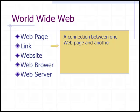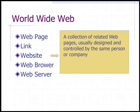A link is a connection between one web page and another. A website is a collection of related web pages, usually designed and controlled by the same person or company, and it is held together by linking between those particular pages.